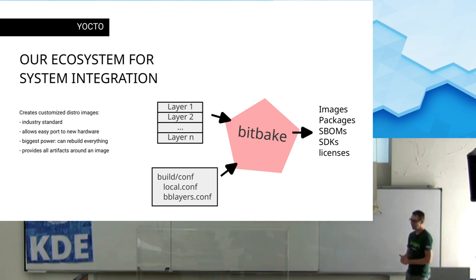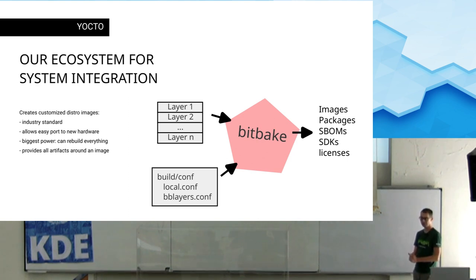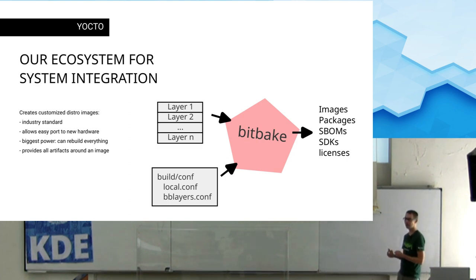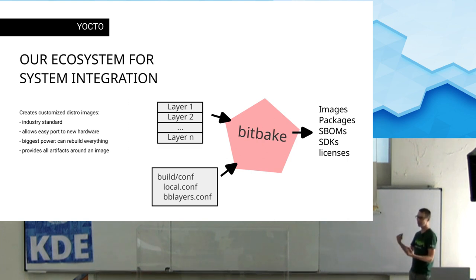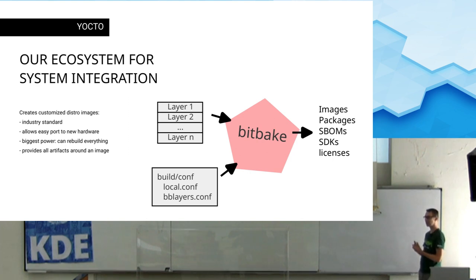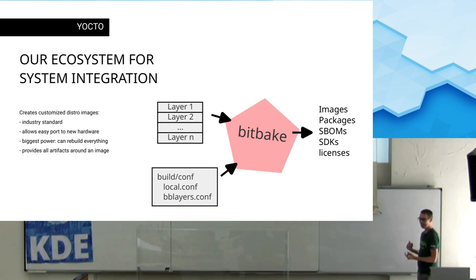You tell BitBake what you want to have, usually by creating a small configuration file — think of a Dockerfile where you explain what you want as a result. You want a system image for your specific board, say a Raspberry Pi 4, with Plasma and KDE and whatever. You list it in a certain format, BitBake looks into all the recipes, sees that for Plasma it has to compile Qt and so on, brings everything into order, fetches source code, configures, compiles, packages, and builds a target image you can put onto the device.